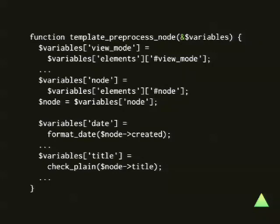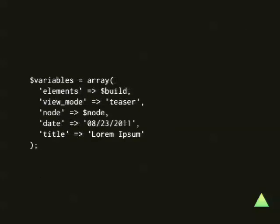The preprocess function adds a view_mode from the elements parameter it received, finds the actual node object, puts it in its own variable so it can be used more easily, and defines the title variable. If this were the whole preprocess function, this would be the new variables array. This makes sure that you can actually use $title in your template, because this variables array gets extracted to normal PHP variables in your template and you can use them.